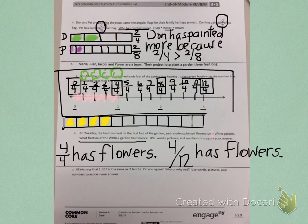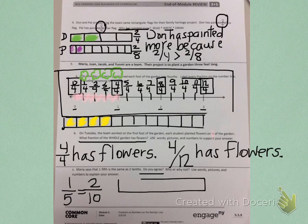Letter C. Be careful on letter C because letter C doesn't have anything to do with A or B. Letter C. Maria says that one-fifth is the same as two-tenths. Do you agree? Why or why not? Use words, pictures, and numbers to explain your thinking. So, Maria says one-fifth equals two-tenths. You need to decide if you agree with that by drawing pictures to compare those fractions. On your own, use words, pictures, and numbers to explain if Maria is correct or not.